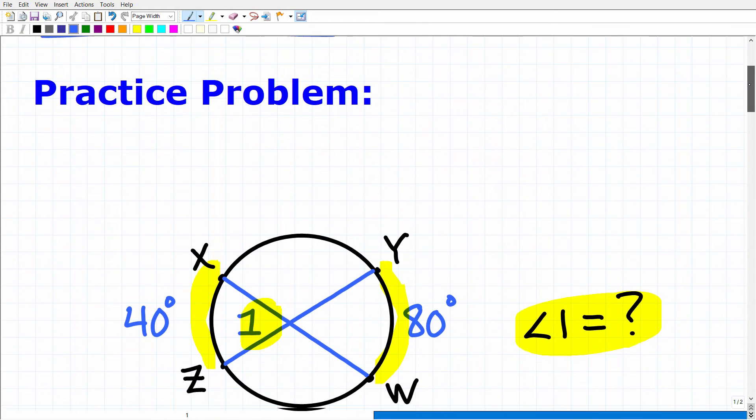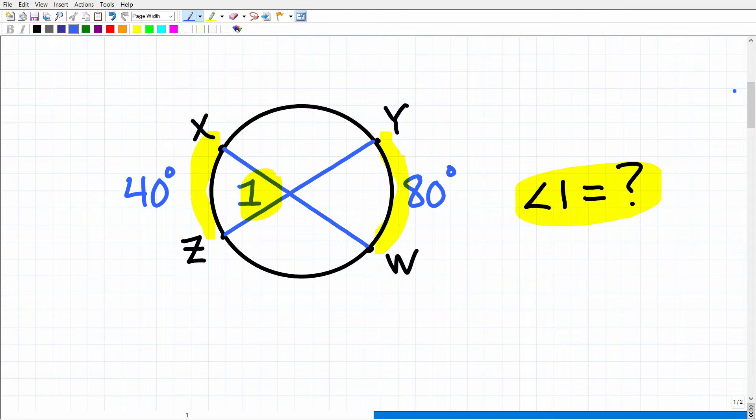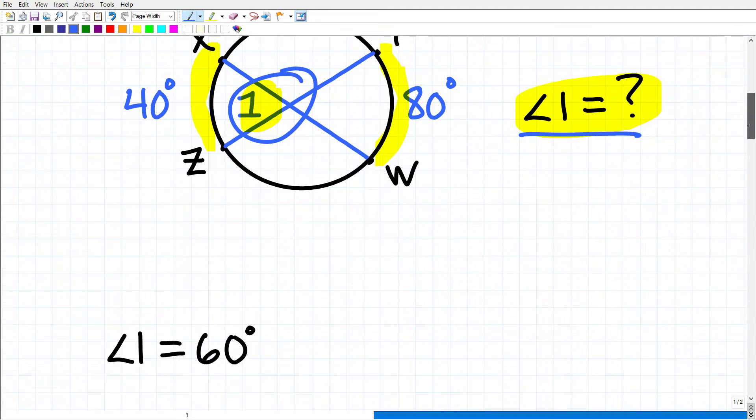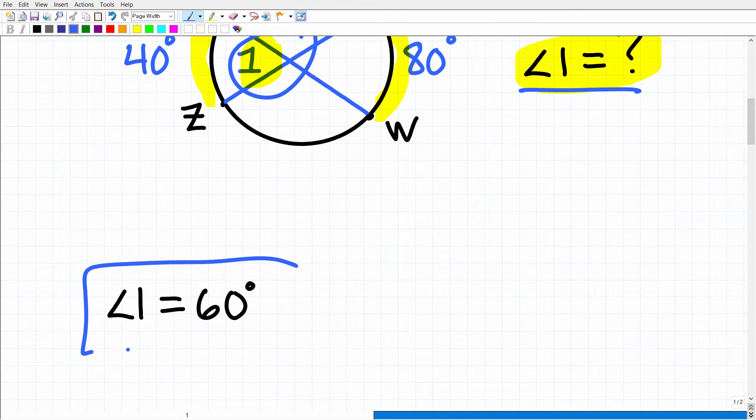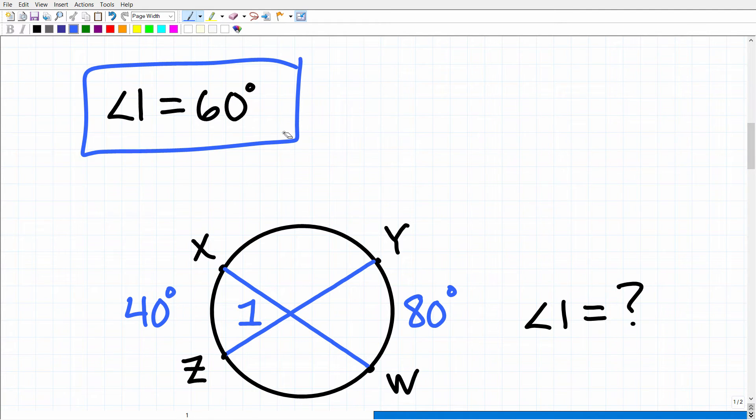Okay, so let's go ahead and get into this problem. This is actually pretty easy here, but what we need to understand is a formula. But let's go ahead and see if you got this answer. So angle 1 is equal to what? Well, angle 1 is equal to 60 degrees. All right, now this is not that difficult.